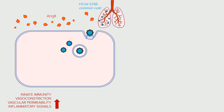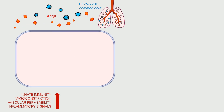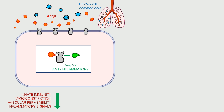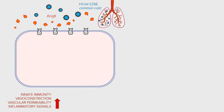To prevent excessive inflammation, ANG2 can be inactivated by a membrane-bound enzyme called angiotensin-converting enzyme 2, or ACE2. ACE2 converts ANG2 into angiotensin-1-7, which has the opposite anti-inflammatory effects. But at this active phase of infection, ANG2 is very much needed. So the cell expresses an inhibitory membrane protein, angiotensin type 1 receptor, or AT1R.